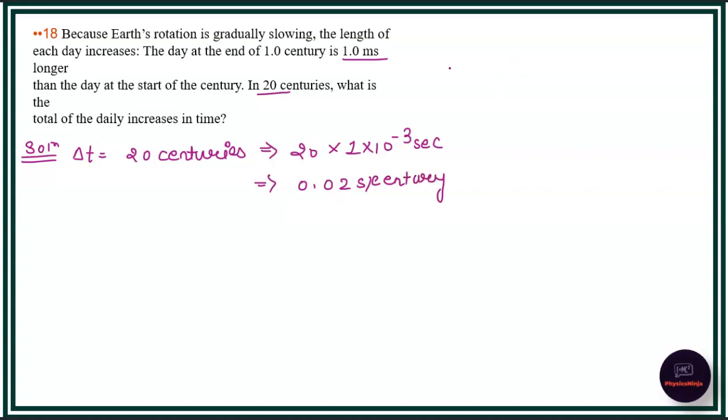Now, to calculate the average increase in the length of the day, this will be equal to 0.01 seconds. So, what is this? This is actually a calculation of the average daily increase in the length.